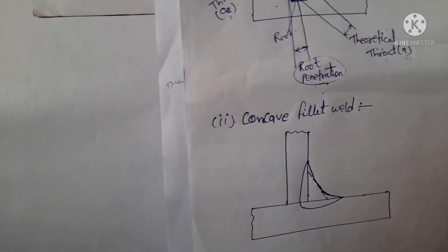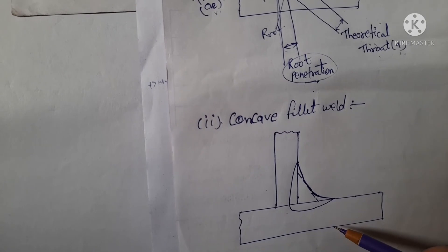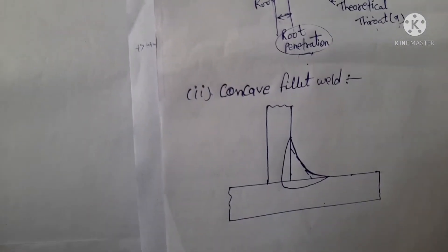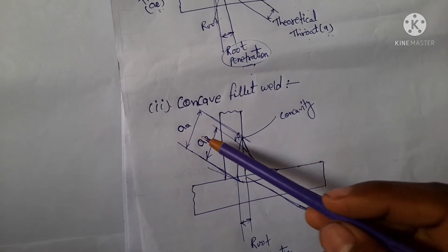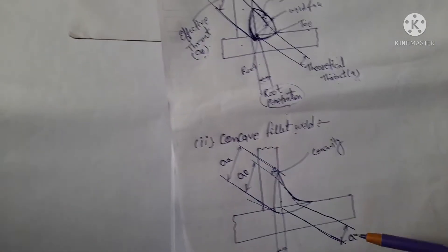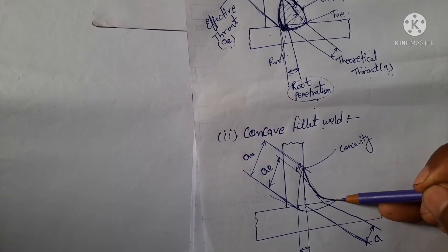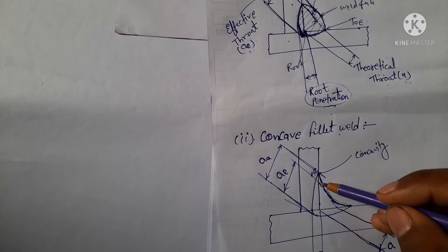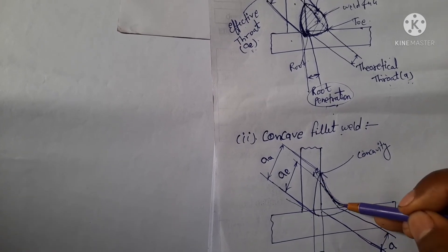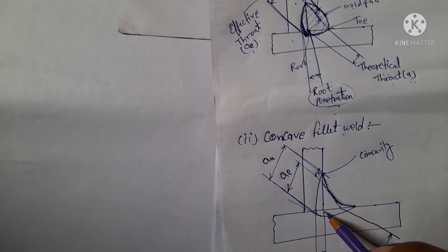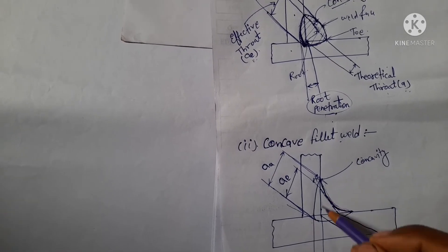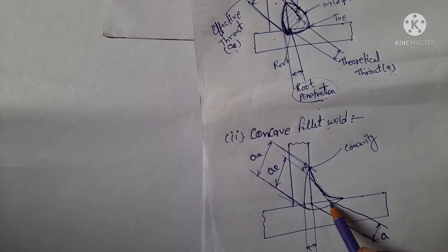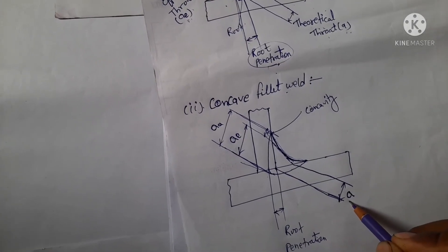Now we move to the concave fillet weld. This is a convex fillet weld, and this is a concave fillet weld. In concave fillet weld, this is the actual welding in concave shape. This is the imaginary line. The distance from the root — where the two plates meet — to this imaginary line is the theoretical throat.